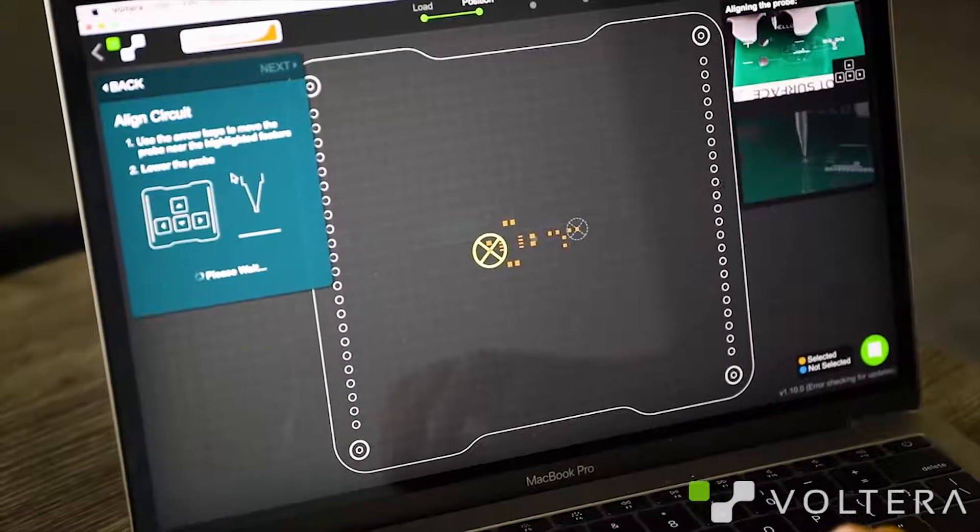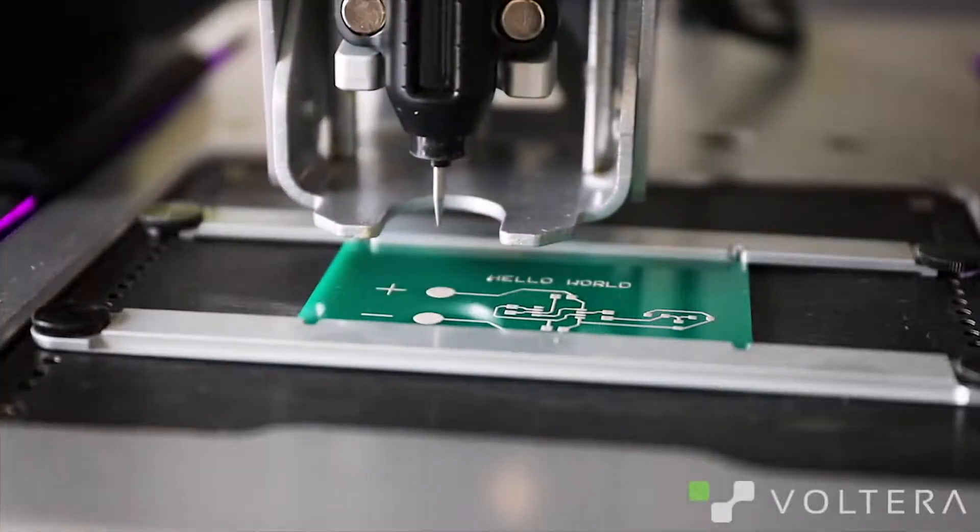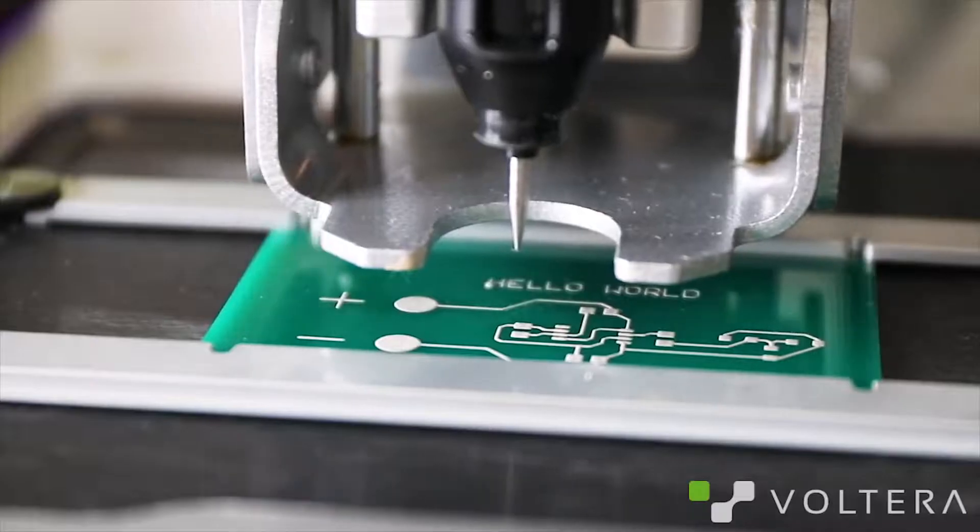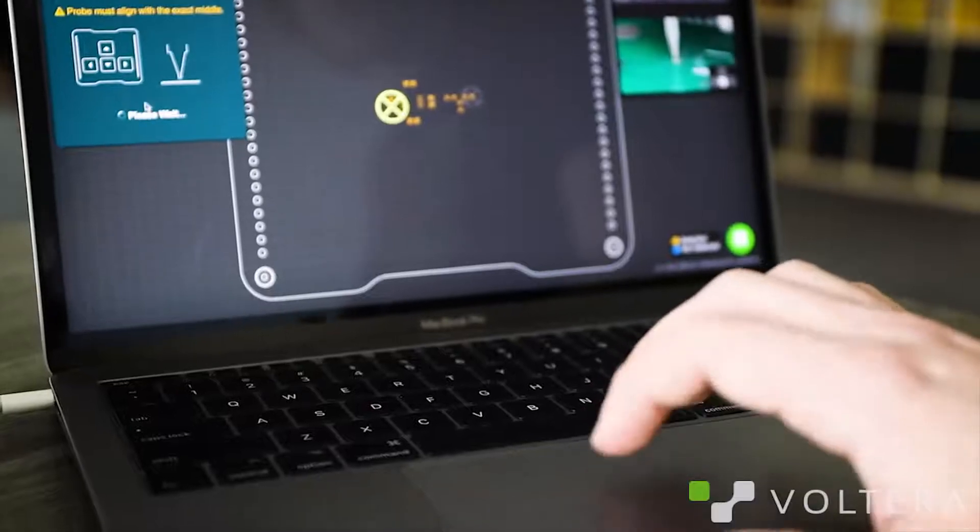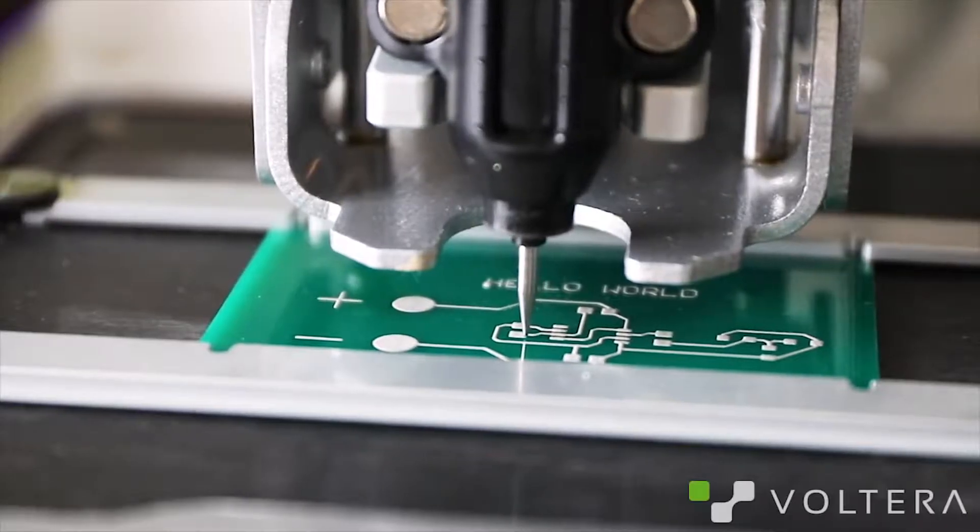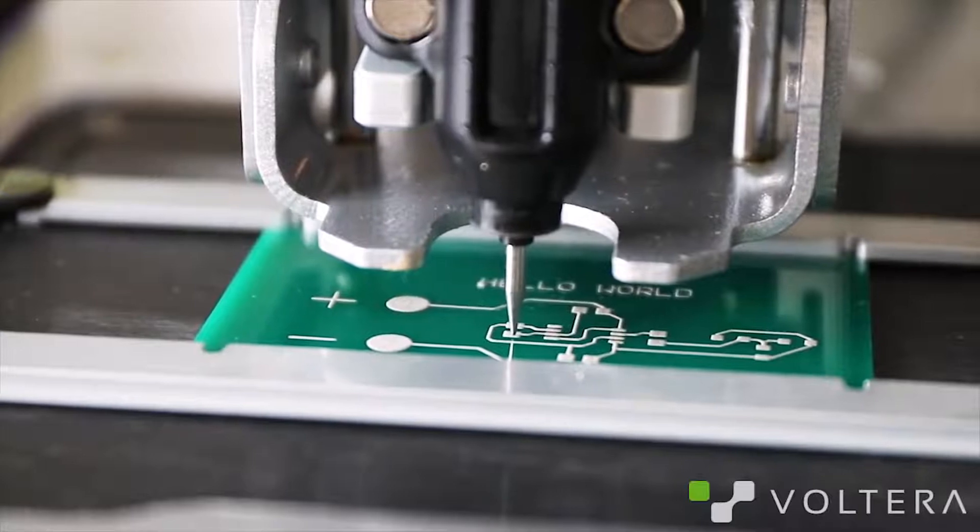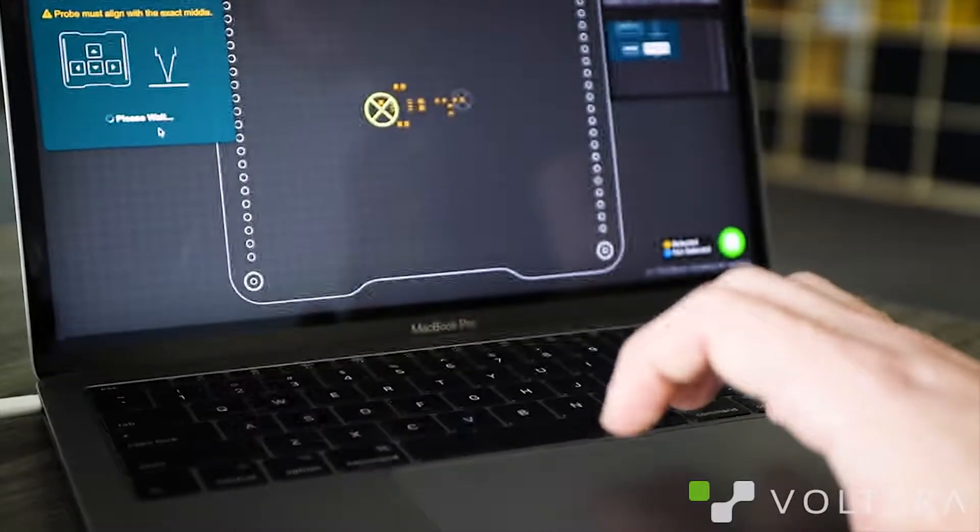I'm just going to select a pad and the probe will move over it. Using the arrow keys, I can line it up roughly and lower the probe. Now the resolution is finer and I can get the probe perfectly centered. When I've got the probe dead center of the pad, I'll hit measure. Now we head to another feature and do the same thing again.